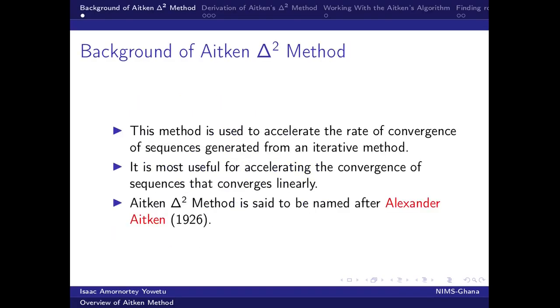When you have an iterative method which generates a set of sequences converging linearly, we can apply the Aitken's method to speed up the rate of convergence. And this Aitken's method is said to be named after Alexander Aitken in 1926.